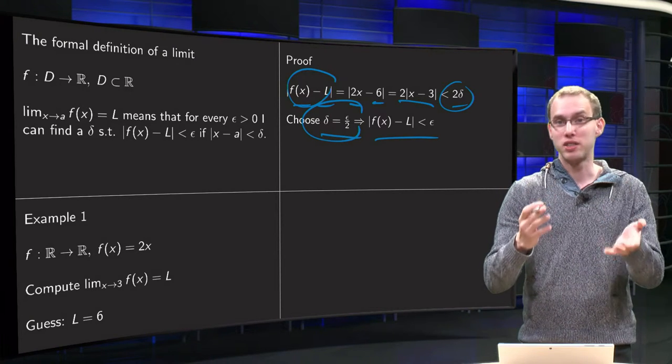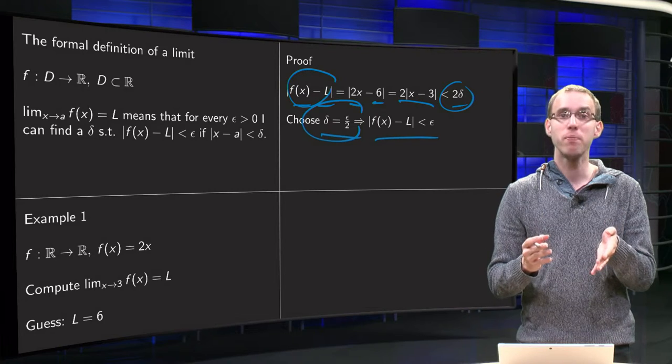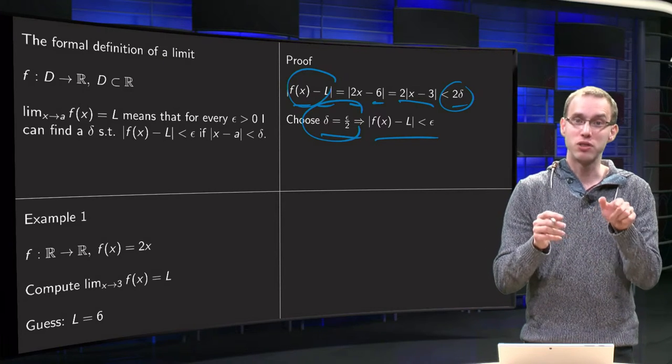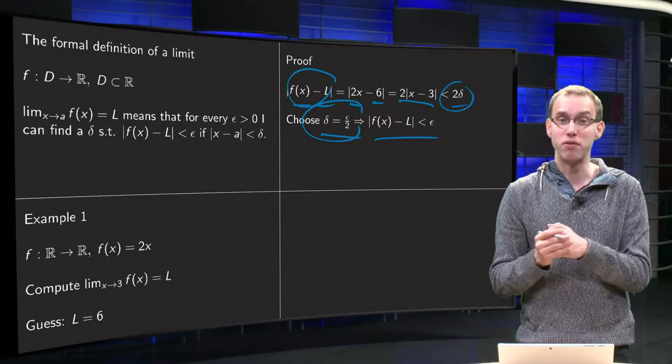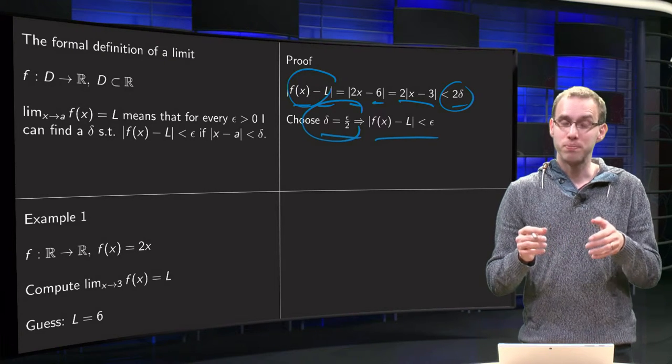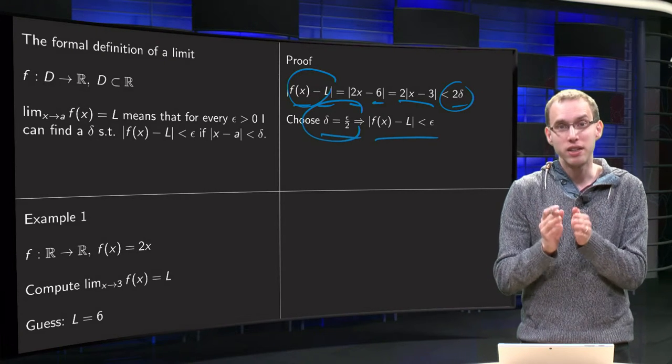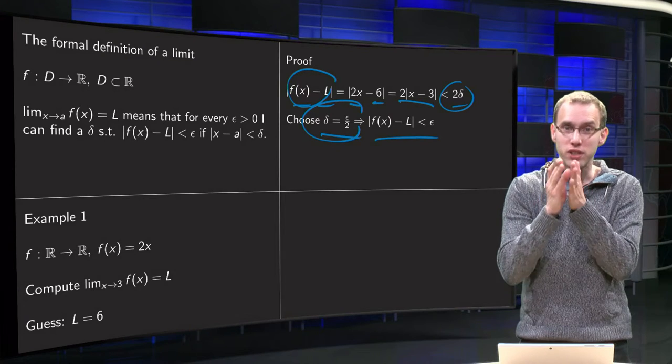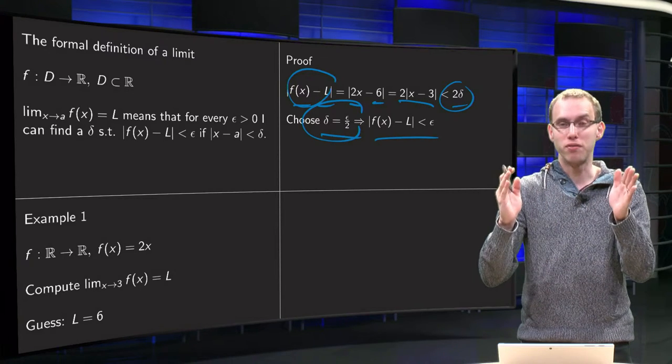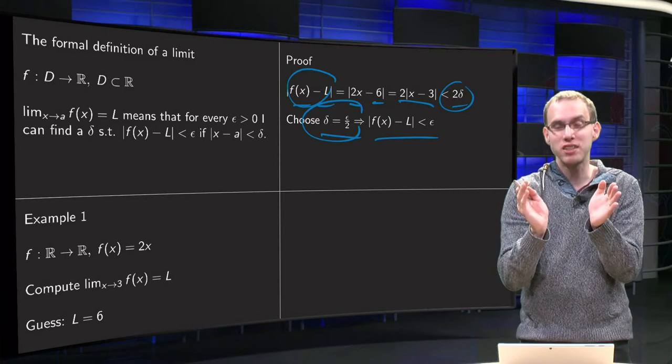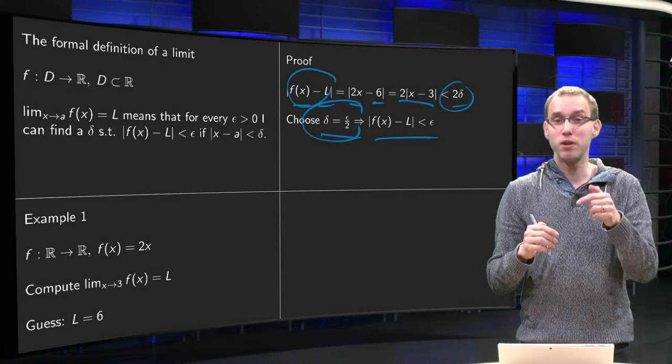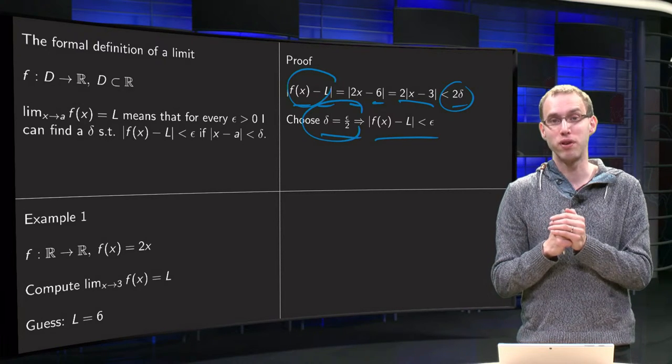So if someone gives you, say, epsilon equals 0.1, then if you choose delta equals one half of that, so 0.05, then you are in this interval centered at 3 with width 0.05, and all those x values inside this interval will be at most a distance 0.1 from 6.